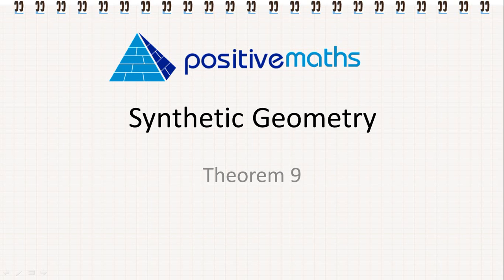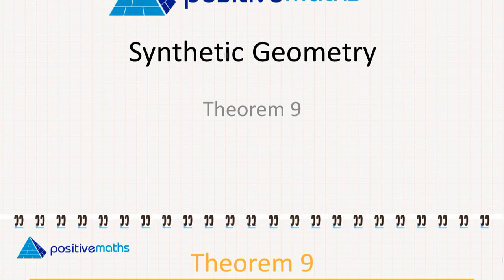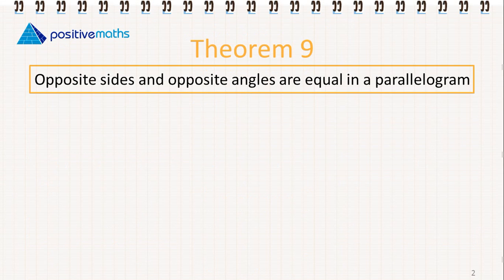In this video for positive maths, we're going to go through the proof of theorem 9. We have to prove that opposite sides and opposite angles are equal in a parallelogram.